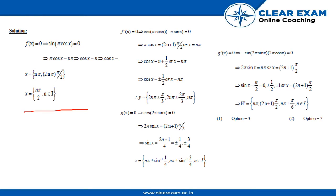We get y as 2n pi plus or minus pi by 3, and 2n pi plus or minus 2 pi by 3, and pi. Similarly for g(x) we get...